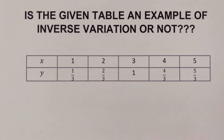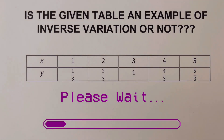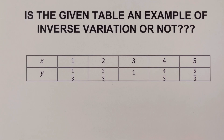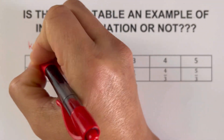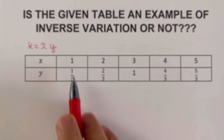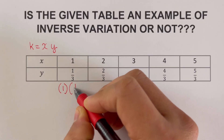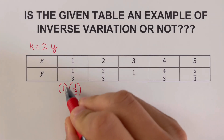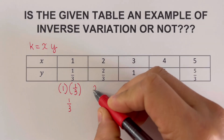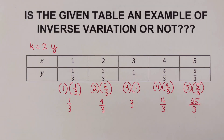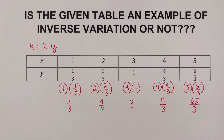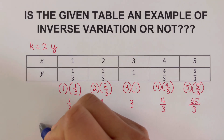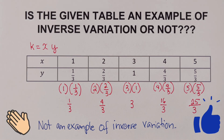For the final example, pause the video and try it yourself first. To check, we determine the proportionality constant k by multiplying x and y for each row. Starting with x equals 1 and y equals one-third, the product is one-third. Since the products of x and y are not the same across all rows, this is not an example of an inverse variation.